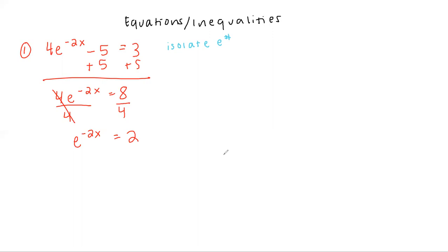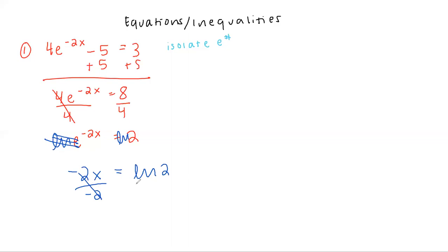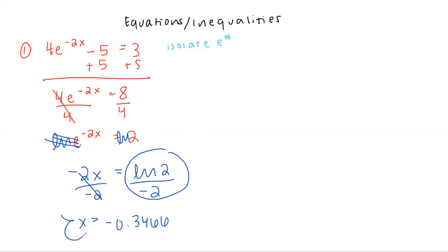Now that we have e to the negative 2x equals 2, like in previous problems we'd take the log of both sides — but now because we're working with E, we take the natural log of both sides. On the left, the ln and the e cancel out, leaving negative 2x. On the right, we still have the natural log of 2. Then to get x by itself, divide by negative 2. Type ln(2) divided by negative 2 in your calculator, and the answer is approximately negative 0.3466. You'll always get decimal answers since e is irrational.